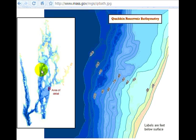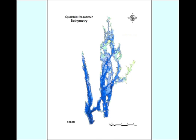The map you can obtain from the quabbinreservoir.net website is a version of this. What you're seeing here is about a 10% view of that map. In reality, if you wanted to download it and take it to a printer, you'd better find someone with a large-format printer because it's about 30 inches wide by 40 inches long.